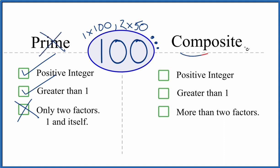So is 100 a composite number? Well, it's a positive integer greater than 1, and we have more than 2 factors. So 100 is a composite number.